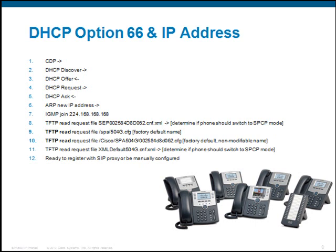In the event of option 66, you'll see step 8 — the phone still sends a TFTP read request to see if it should be running in SPCP mode. But now steps 9 and 10 are new. The phone sends a TFTP read request for /spar/504g.cfg — this is how the phone resolves the /spar/$PSN variable. Then step 10, if it does not get a response, it will send a request for /cisco/spar504g/ and then the MAC address .cfg for the phone. This is a non-configurable file name that the phone requests, and it only does that if it doesn't receive a response in step 9.